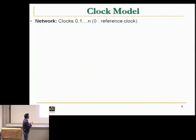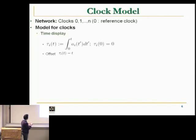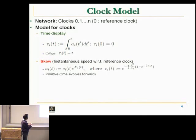To introduce a model, consider a network of n+1 clocks, 0 to n, where 0 is a reference clock. I'm going to introduce the clock model in three steps. Let tau_i(t) denote the time display of node i. In our model, this is simply an integral of the clock skew, the speed—similar to displacement being an integral of velocity. The offset between two clocks at time t is defined as the difference of the display minus reference time. The skew, which is the standard speed with respect to the reference clock, is given by alpha_i(t) = exp(x_i(t) - epsilon_i^2/(4*alpha_i)), where x_i(t) is a stochastic process given by an Ornstein-Uhlenbeck process.